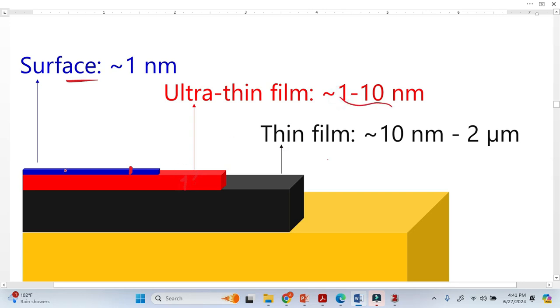So XPS, most of the cases, works in this area. 95% of the electrons we get from this area. But from the thin film, X-rays may reach to this micro level. The penetration of the X-ray can reach to the micro level.